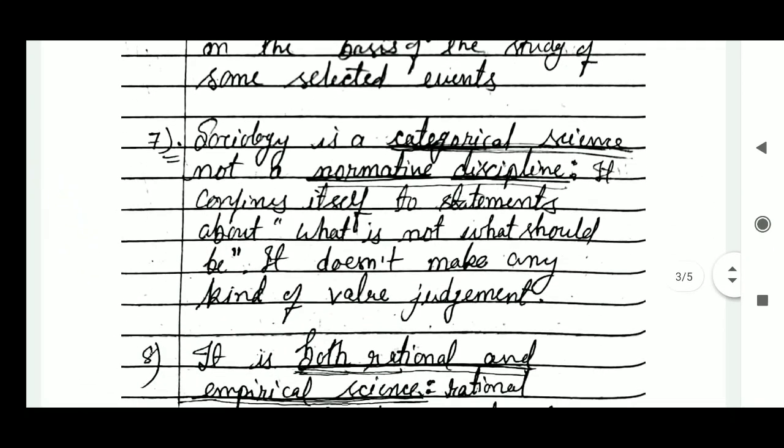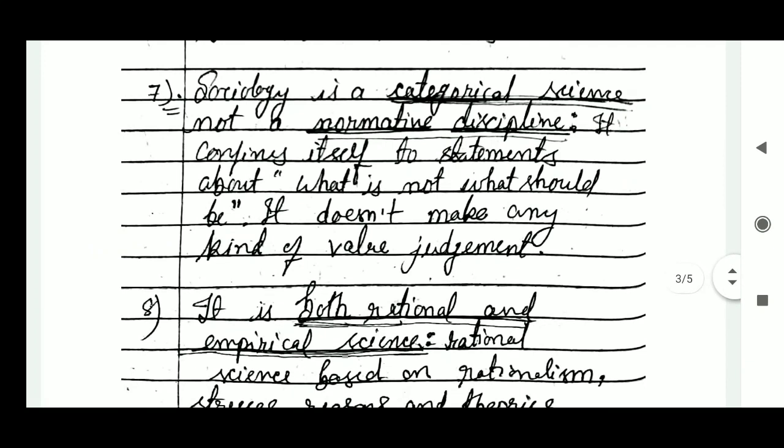The seventh point is that sociology is a categorical science, not a normative discipline. It confines itself to statements about what is, not what should be. It doesn't make any kind of value judgment.